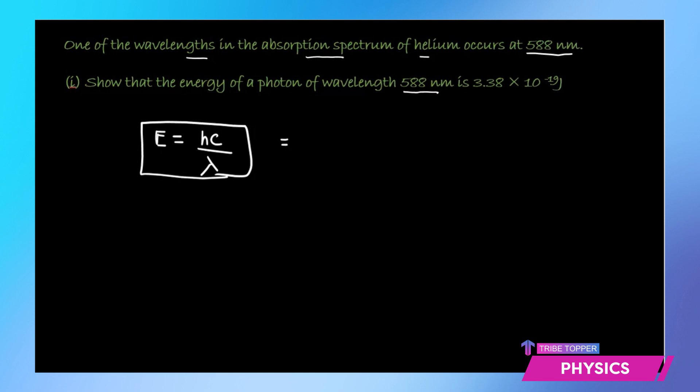All you have to do is plug in the values. Now h is 6.634 times 10 to the power negative 34, which you will find in your data booklet, times c the velocity of light 3 into 10 to the power 8 upon lambda. The wavelength is 588 times 10 to the power minus 9 meters. Solving this we get an energy equal to 3.38 times 10 to the power negative 19 joules.